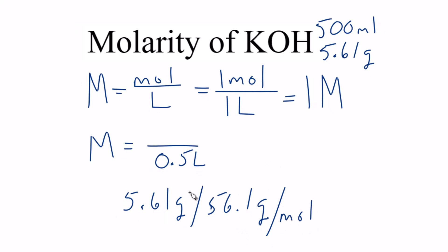So now we divide, we've got grams on top, they cancel out. We end up with 0.1 moles of our KOH solution. We put that in, 0.1 moles, and 0.1 divided by 0.5 gives us 0.2 moles per liter, or 0.2 molar.